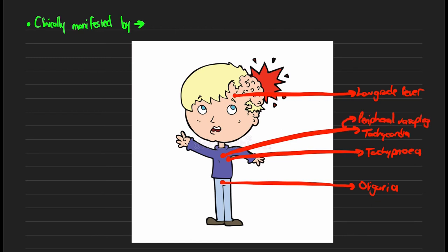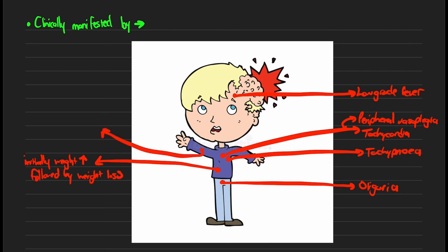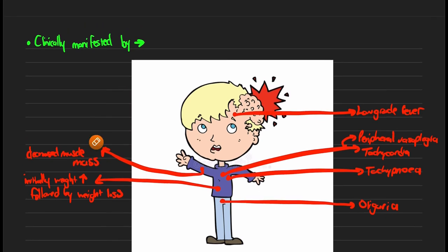Staying on the heart, our patients also have peripheral vasoplegia, which is characterized by decreased blood pressure. Initially our patients present with weight gain due to water retention, followed by weight loss secondary to decreased muscle mass. If we look at the skin and white blood cells, our patients typically have leukocytosis. Moving through to the stomach, our patients typically present with a poor appetite.